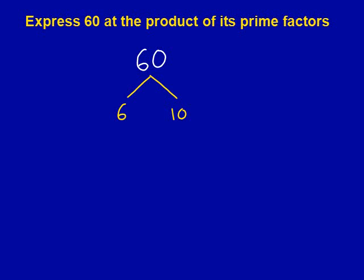We now look at our two numbers, 6 and 10, to see if they're prime numbers. Neither of these are prime numbers because we can still split them up into more numbers. We can split 6 up into 2 and 3 as I've done in this diagram. Now we look at 10. Can we split 10 up? We can split 10 up into 2 and 5 as I've done here.